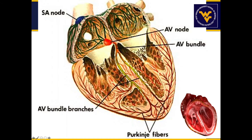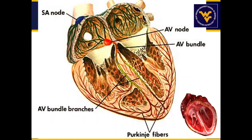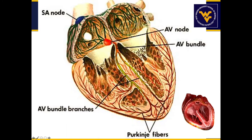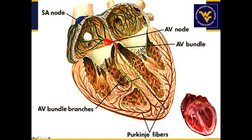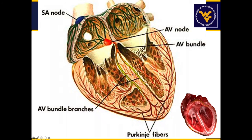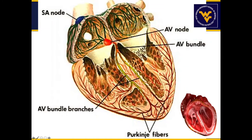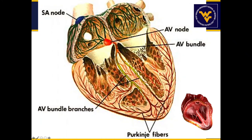The action potential travels from the SA node through the atria causing contraction, then arrives at the atrioventricular (AV) node, which focuses the electrical impulse so it moves down the AV bundle, separating into the left and right bundle branches. As the action potential moves through the bundle branches it contacts cardiomyocytes in that region, causing the muscle to contract. The action potential eventually reaches the Purkinje fibers, spread throughout the right and left ventricles, and as it propagates through those nerves it causes myocytes to contract — producing the squeezing of the heart muscle.